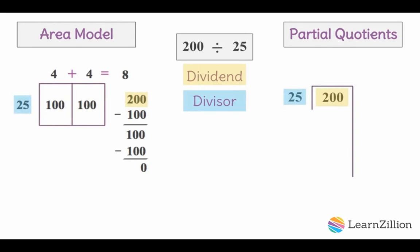Now it's time to solve using partial quotients. I know that four groups of 25 equals 100, so I'm going to subtract that 100 from my dividend, 200, and I'm left with 100 again. Four more groups of 25 equals 100.